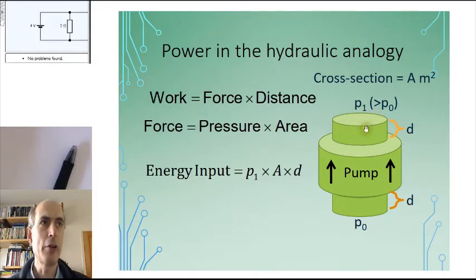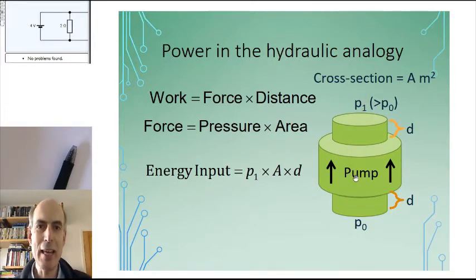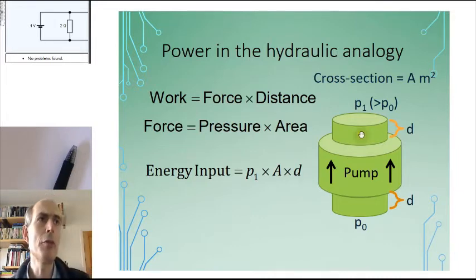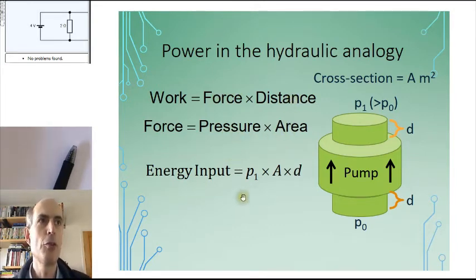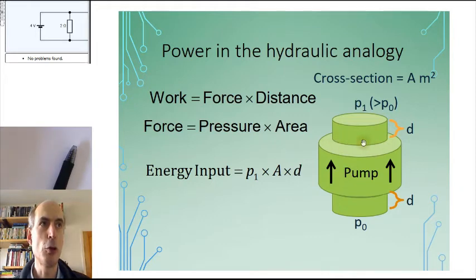If there's a cross-sectional area here of A square meters, then the force pushing down on the pump is P1 times A — the pressure times the area. And if the pump is going to push water up into this pipe, then it has to do work against that force. If it's going to push the fluid up through a distance d, so that all the fluid in this pipe moves up through a distance d and a new amount of fluid arrives at the bottom, then the total amount of work done is the force times the distance: the pressure times the area times the distance — P1 times A times D. And that's the energy that the pump has to give out to push this fluid up through this pipe.